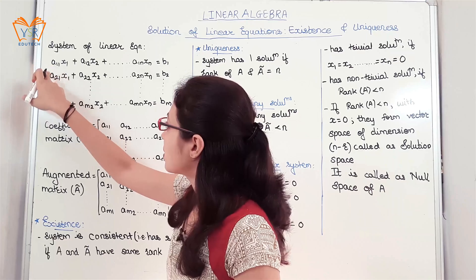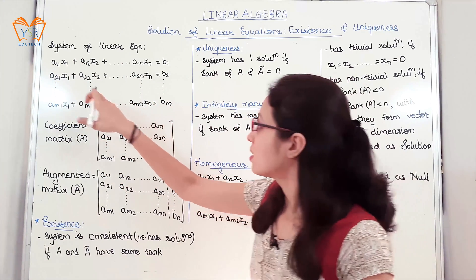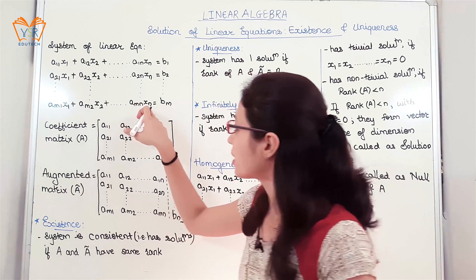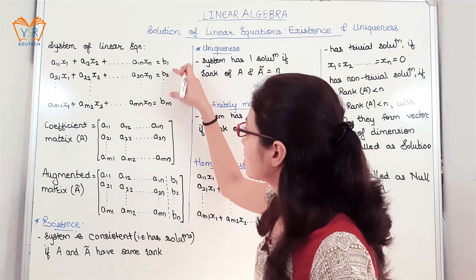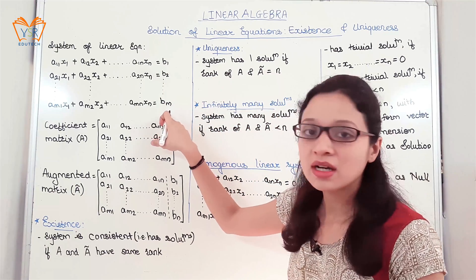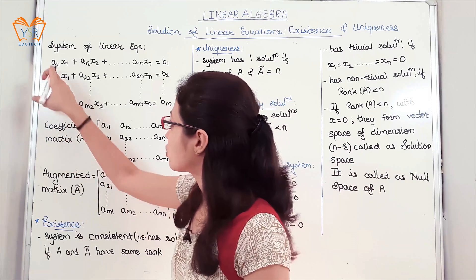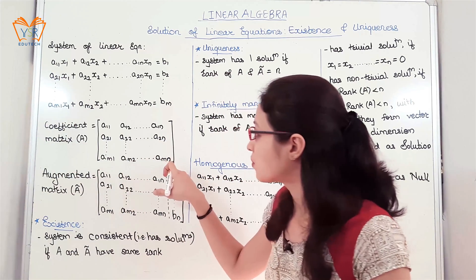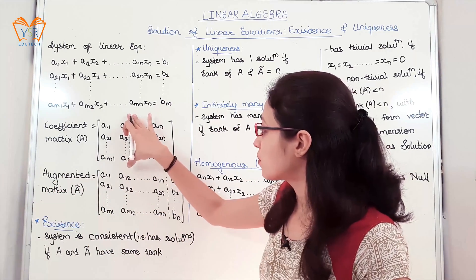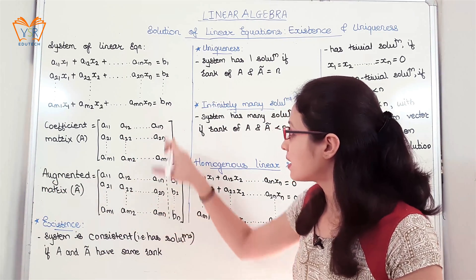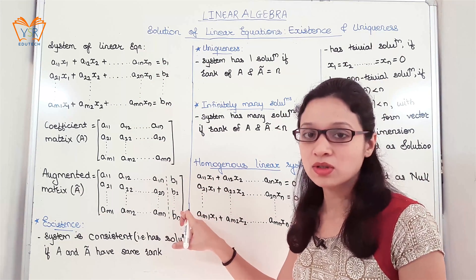All the terms a11, a22 — these are the coefficients and x1, x2 up to xn are the number of unknowns. On the right hand side, b1, b2 up to bn are the constants. The coefficient matrix A is obtained by writing all the coefficients. The augmented matrix consists of the coefficient matrix and at the end we append all the constants as the last column.